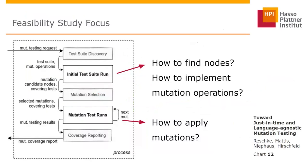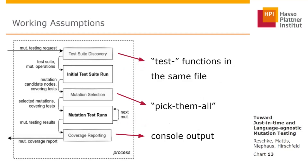For the initial feasibility study, the initial test suite run and the mutation test runs were most important. The key questions are: how can we find nodes, implement mutation operations, and apply mutations at runtime? For the other steps, we chose working assumptions: for test discovery, we assume functions prefixed with 'test' in the test file are the tests. For mutation selection, we simply pick all. And for coverage output, we made a console output.